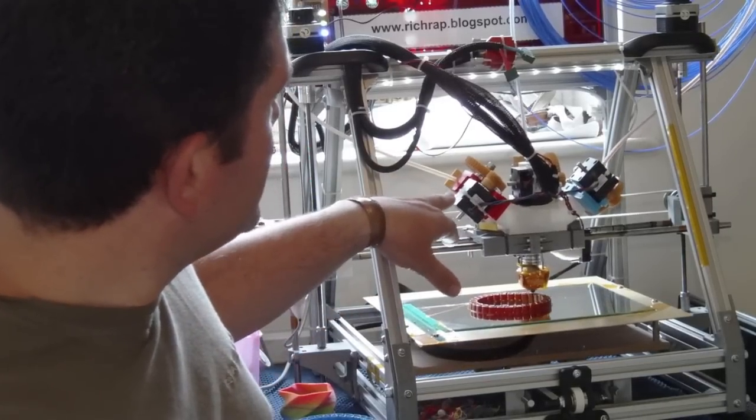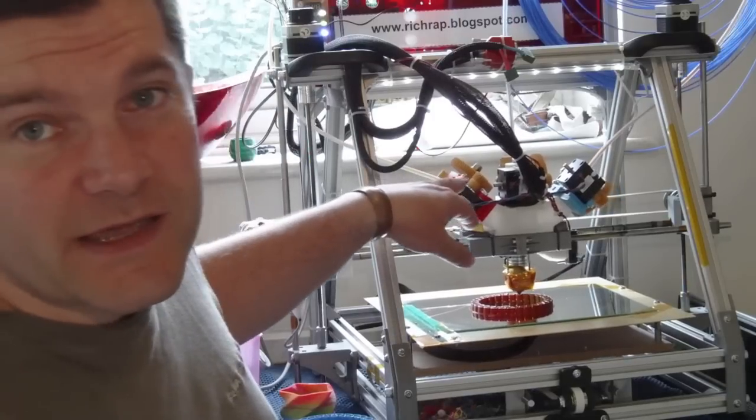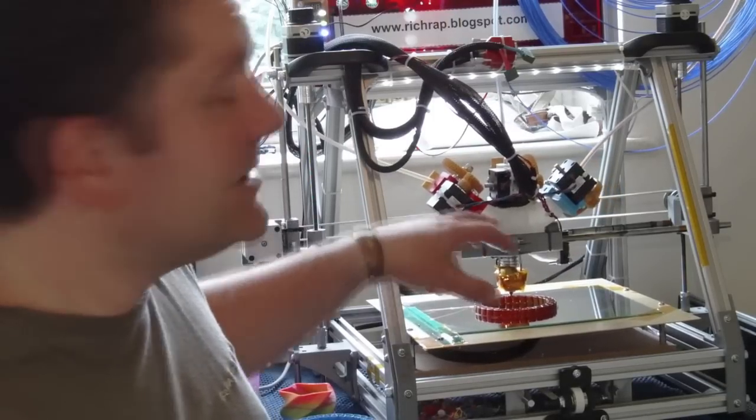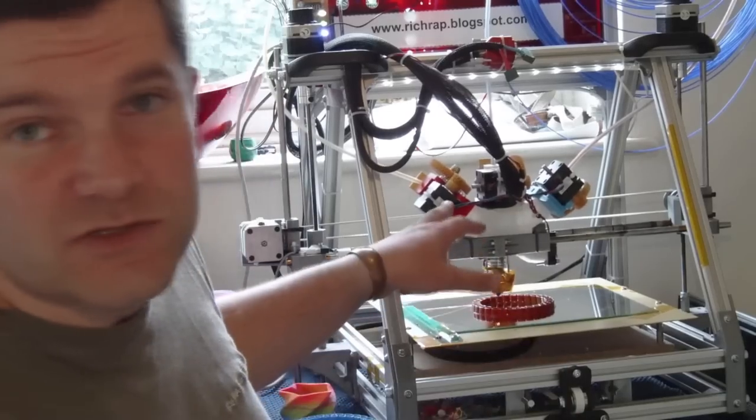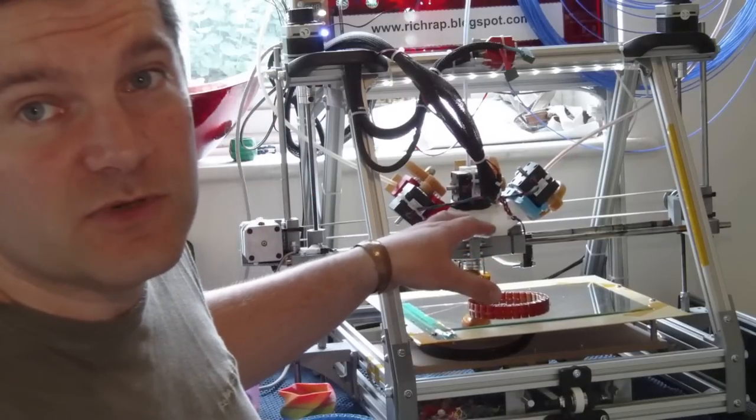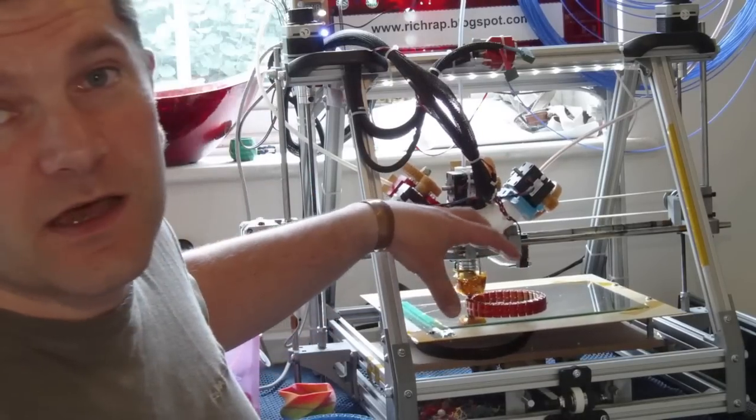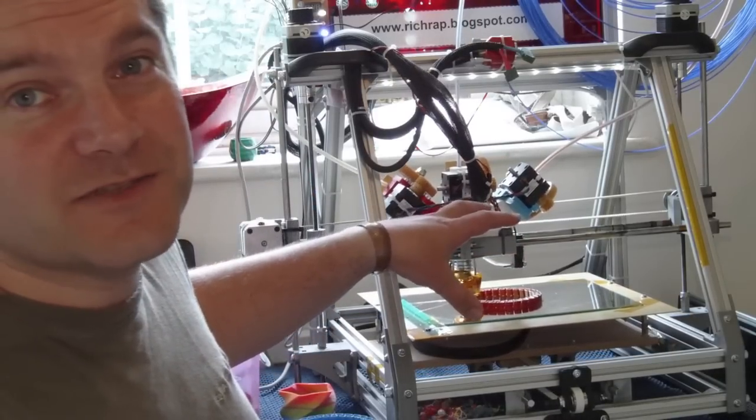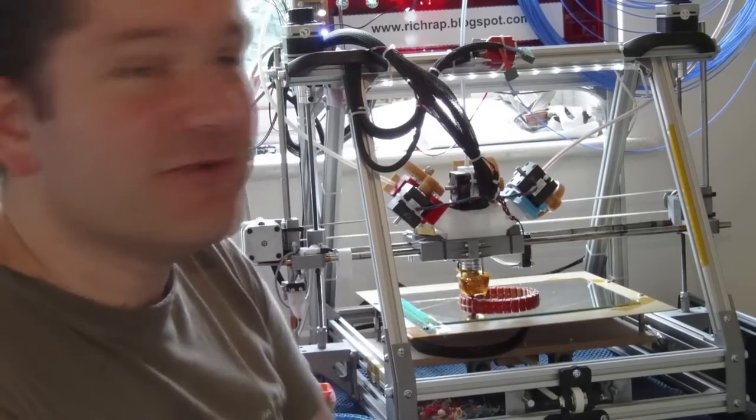At the moment it's printing a little stretchlet bracelet. You can obviously use different materials as well. I've got all three extruders enabled on this one to give a really nice color effect which I'll show you in a second.